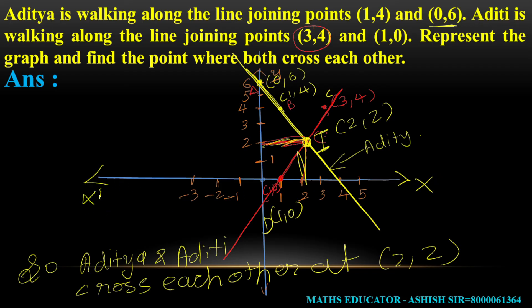To summarize the graph: we have the x-axis and y-axis. Aditya's line passes through (1,4) and (0,6), shown in one color. Aditi's line passes through (3,4) and (1,0), shown in red color. The two lines intersect at point (2,2), which you can clearly see. So Aditya and Aditi cross each other at (2,2).